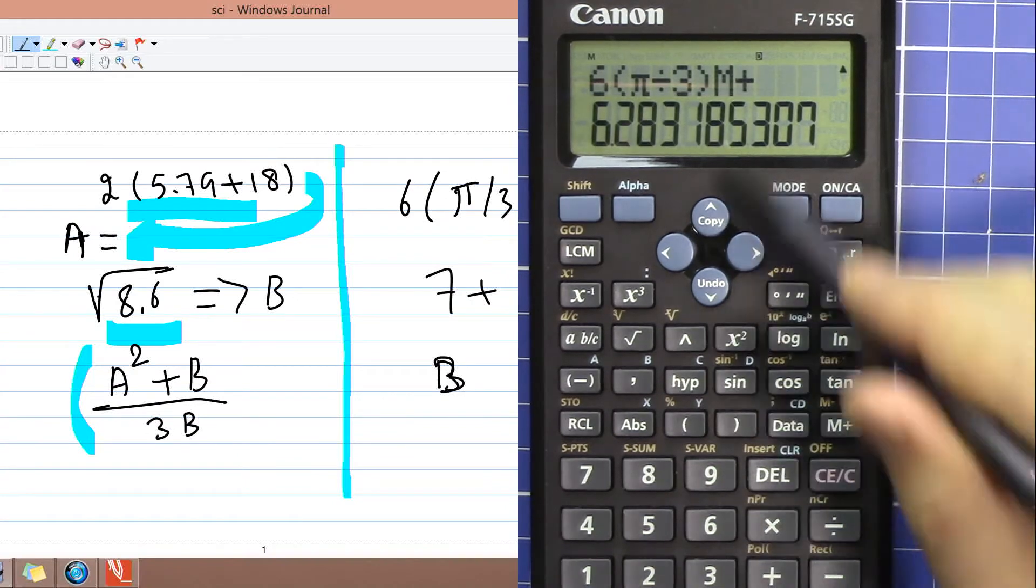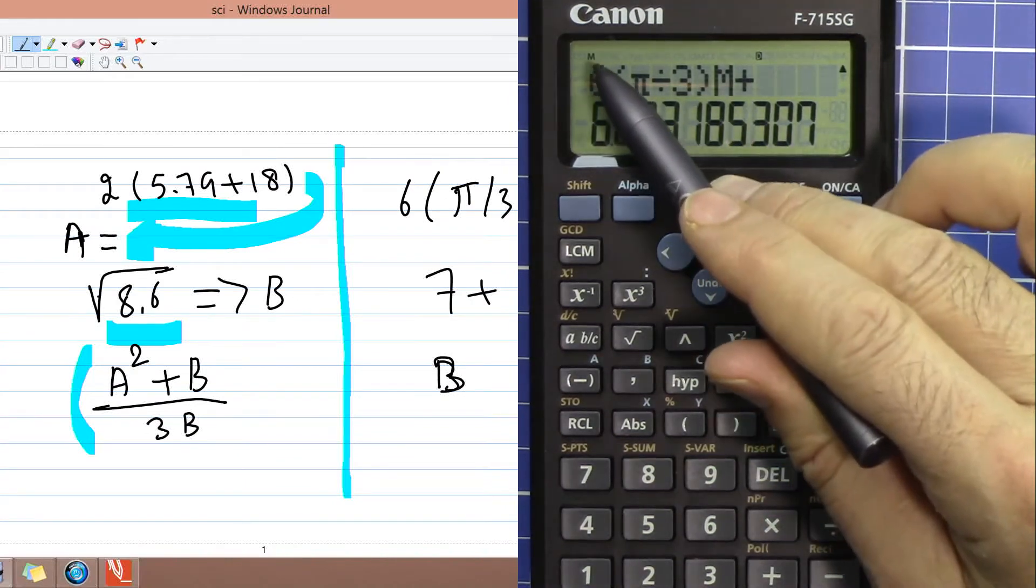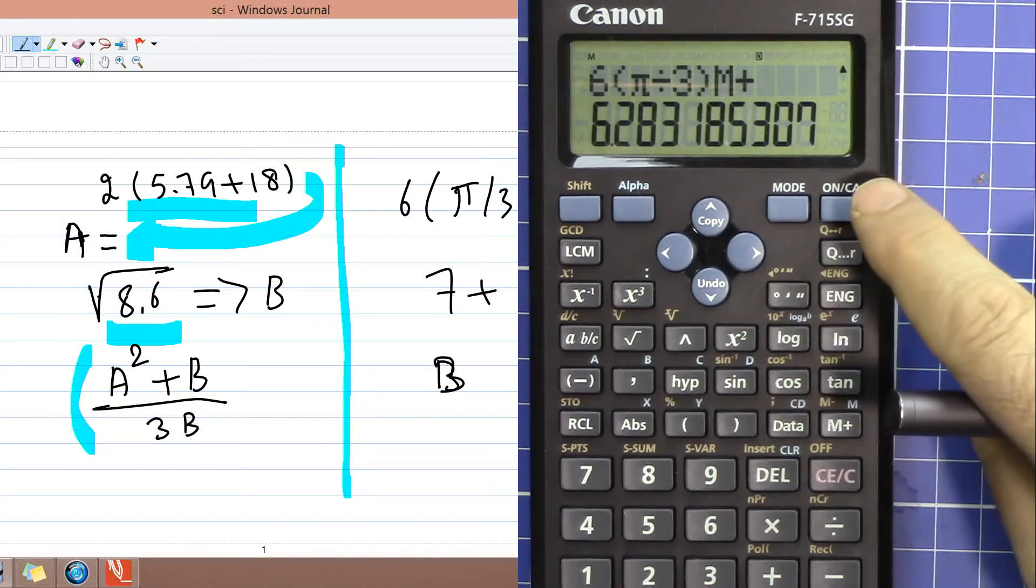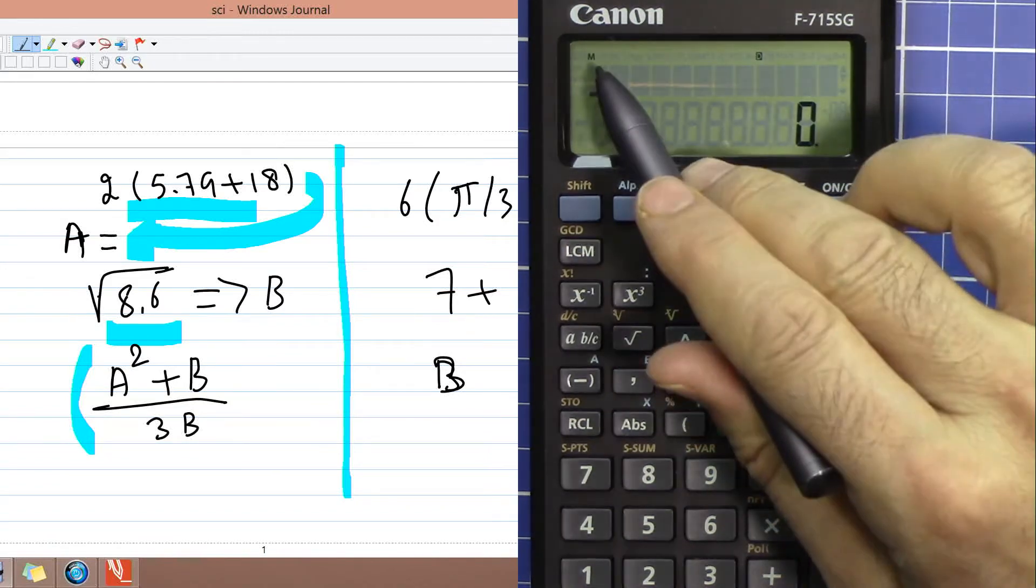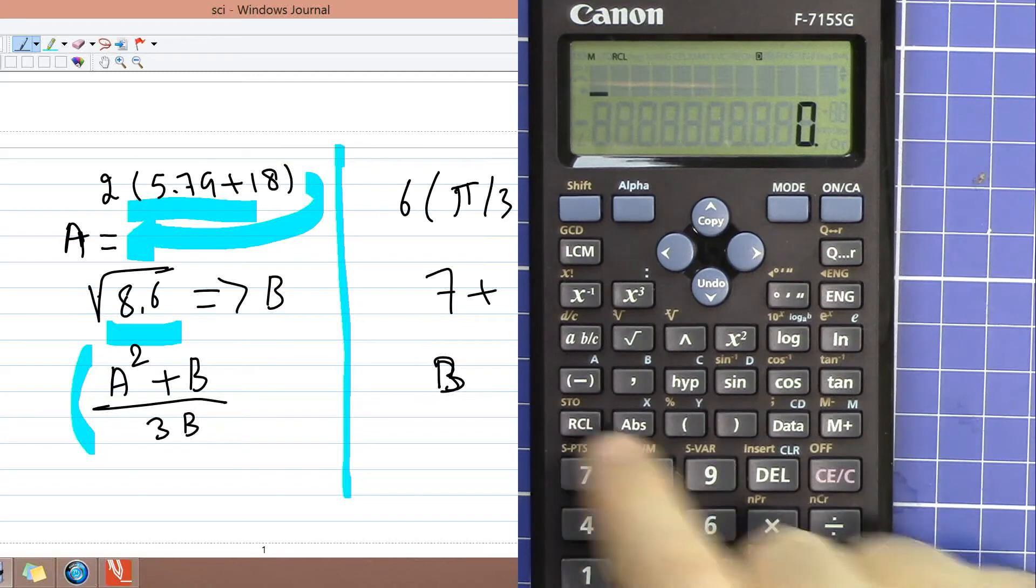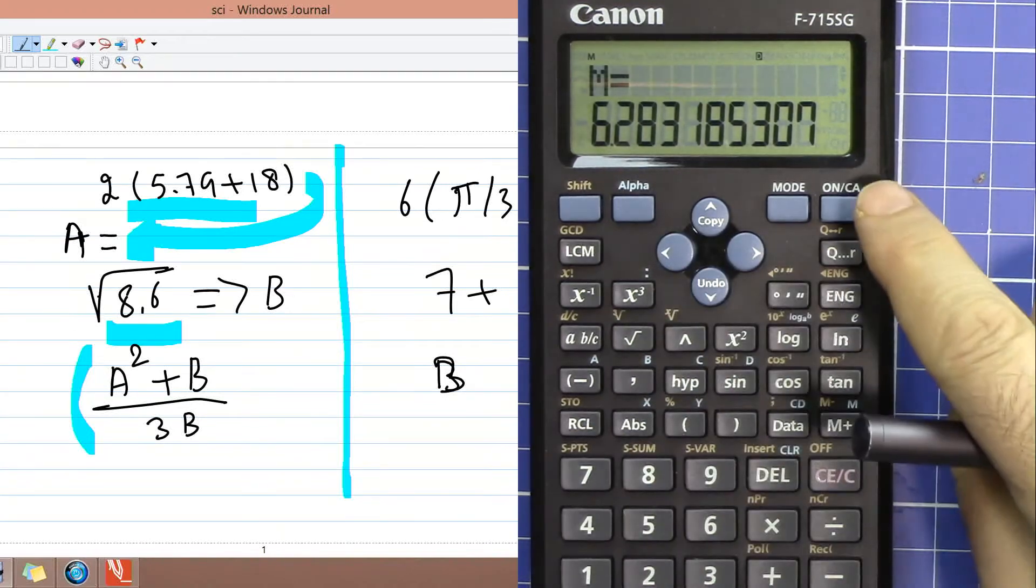So now plus M means it went to the memory and M also appeared here. Now clear. M is there. If you want to just recall it, use simple recall and then M, you get the value.